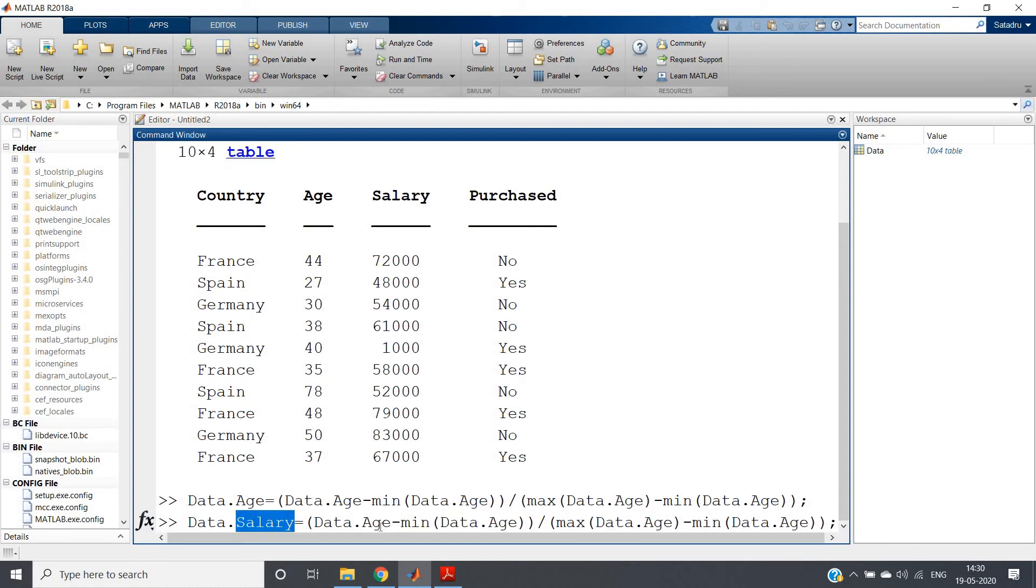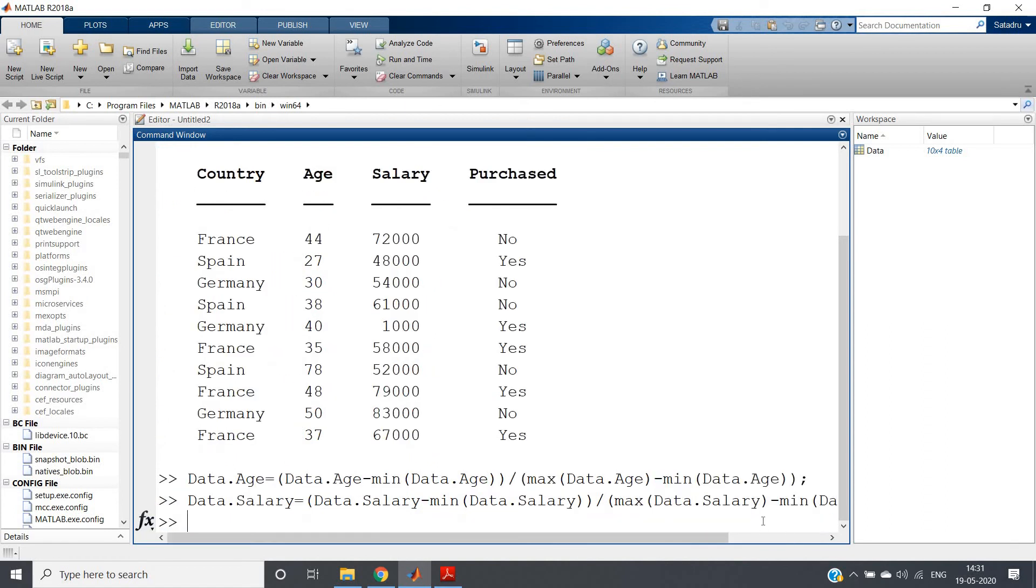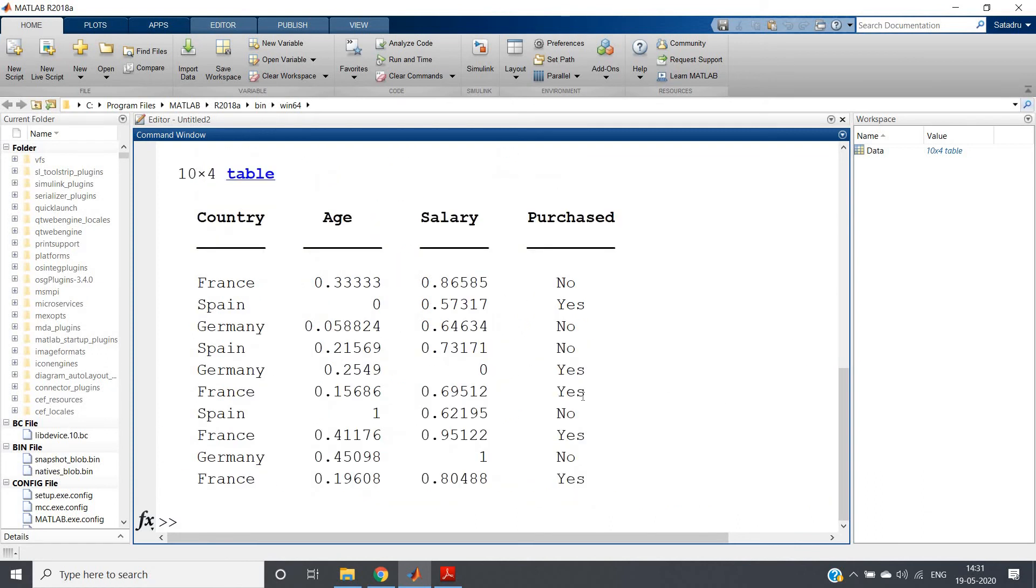And same thing we have to implement for salary. data.salary = (data.salary minus min(data.salary)) divided by (max(data.salary) minus min(data.salary)). Done that.